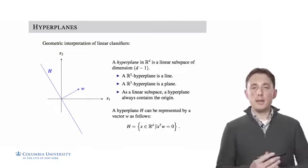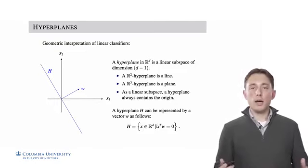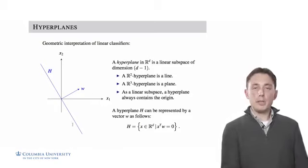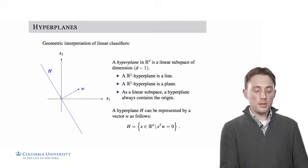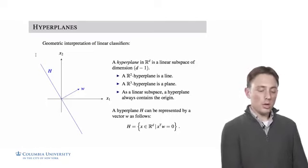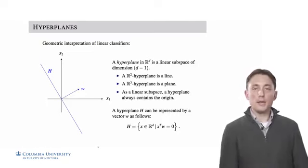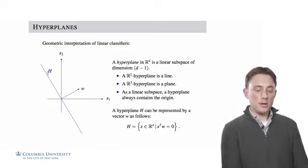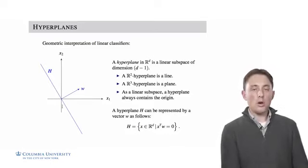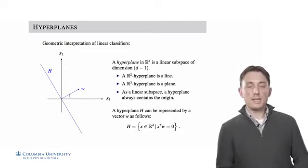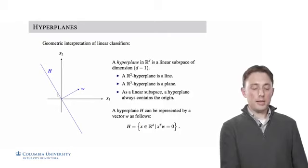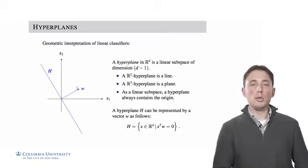That's just saying: give me all vectors x that are orthogonal to w. In this particular example, the only points in all of Rd such that the dot product is equal to 0 are the points that fall along this line here. Any point that we pick along this line has a dot product with w equal to 0 — in other words, all of these points are orthogonal to w. That's how we define this hyperplane: any point such that the dot product between that point and w is equal to 0.